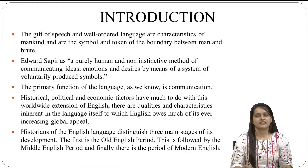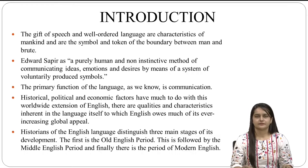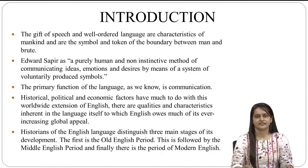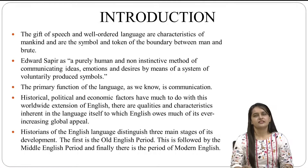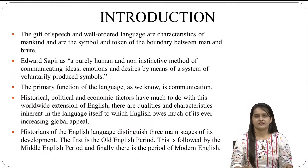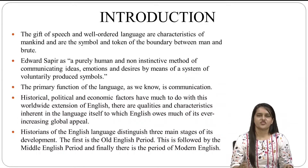Historians of the English language distinguish three main stages of its development. The first is the Old English period, followed by the Middle English period, and finally there is the period of Modern English. This division need not be watertight, for the development of a language is never sudden but is a gradual process. However, it can be seen that at times this process of change is more rapid due to a variety of reasons.